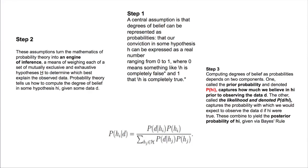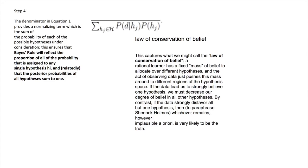The denominator is nothing but a measure to normalize the data so that all the numbers are between 0 and 1. It is a normalizing factor — the sum of all the probabilities of each of the possible hypotheses. This ensures that Bayes' rule will reflect the proportion of all the probabilities assigned to any single hypothesis H_i, and that the posterior probabilities of all hypotheses sum to 1.